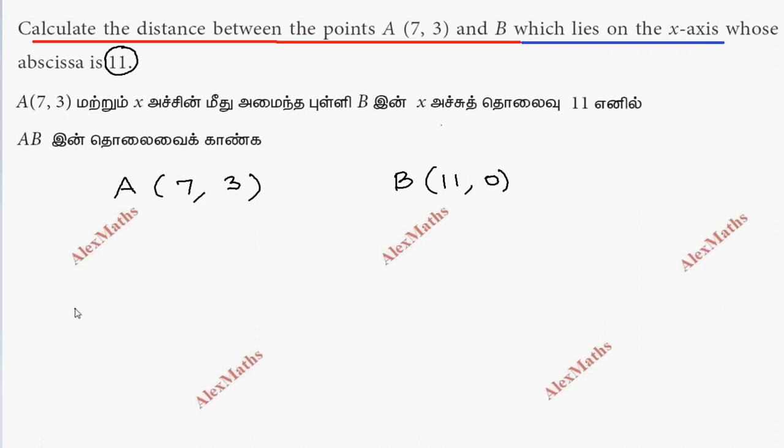So, this is the formula. We use the distance formula. AB equals root of (x2 minus x1) whole square plus (y2 minus y1) whole square.